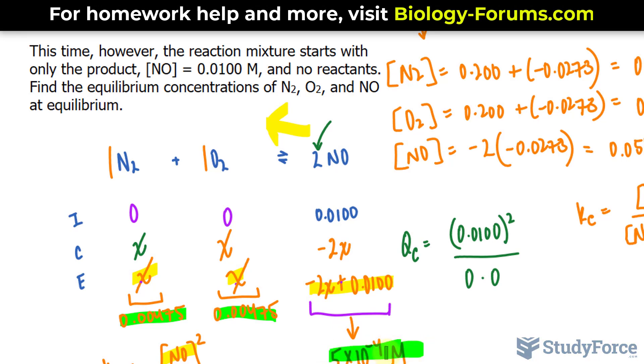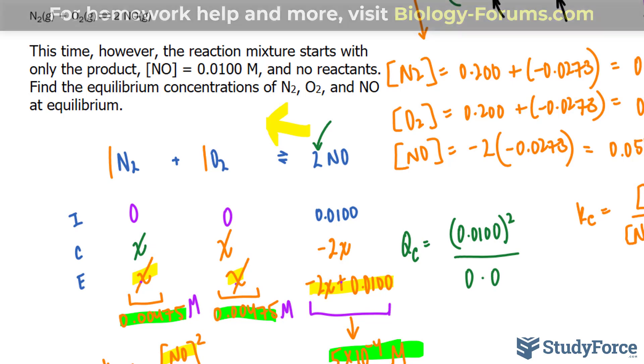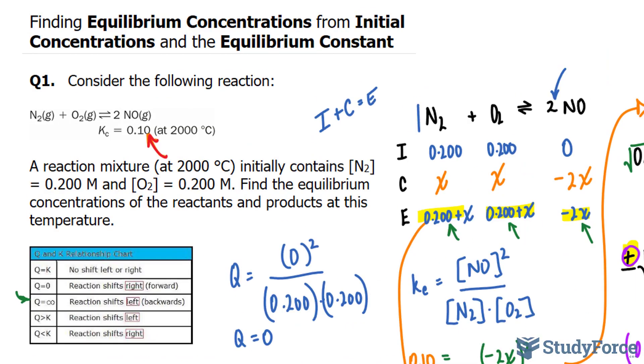I believe that answers the question when they ask us to find the equilibrium concentrations of the three molecules in this reaction. And don't forget that these are also molar. And there you have it. That is how to find the equilibrium concentrations from initial concentrations and the equilibrium constant.